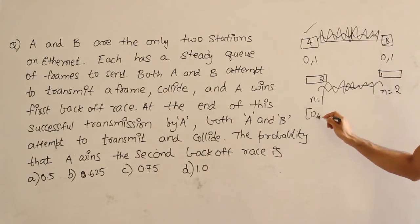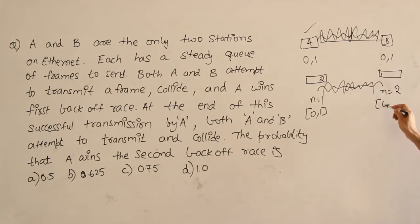Therefore, the range A will get is 0, 1 and the range B will get is 0, 1, 2, 3. Therefore, what is the probability of A winning? How many cases are there? 8 cases. Out of which, how many cases will A win?